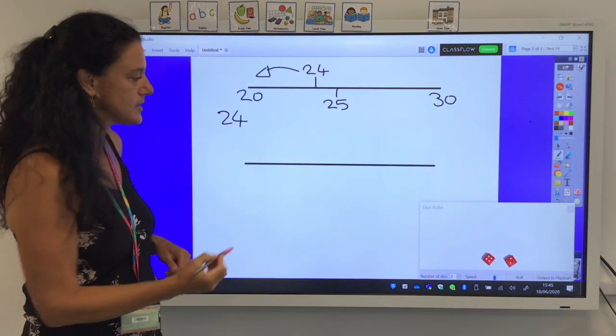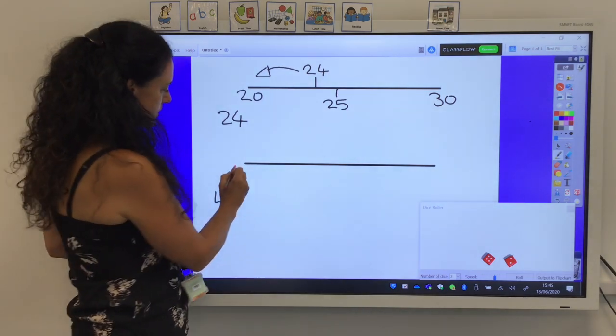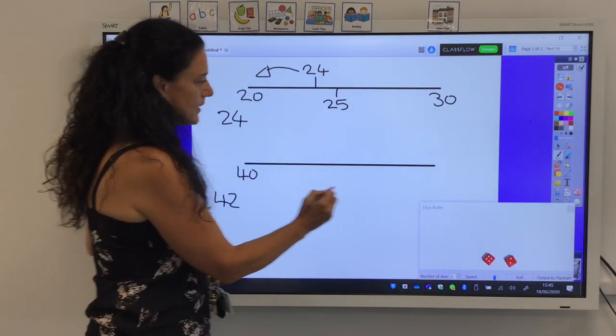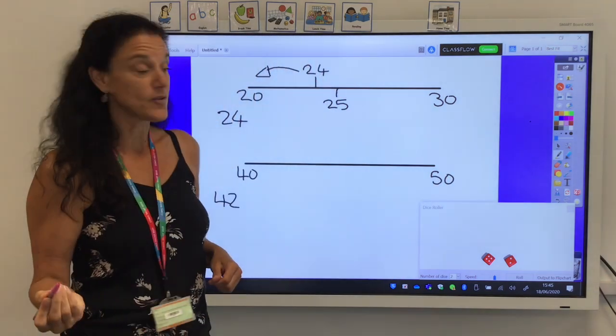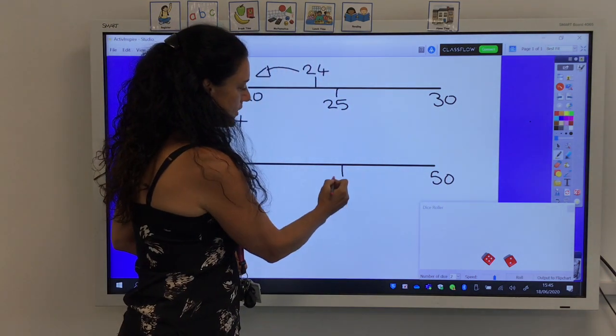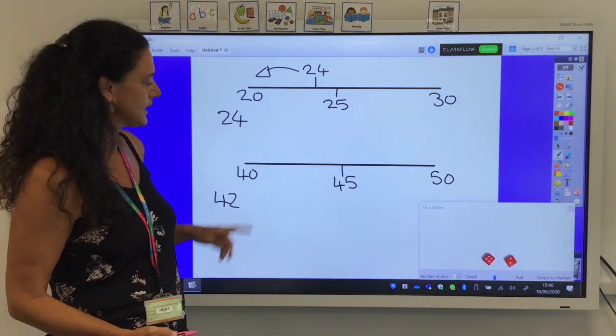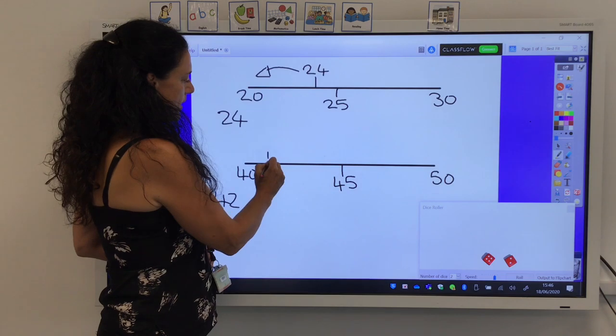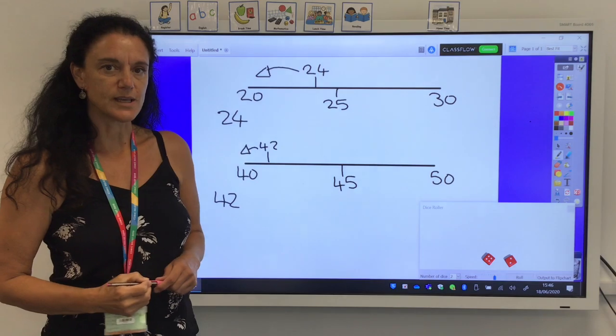If however I use the number as 42, I would need to round down to 40 or up to 50. Again, I'm going to find the midway point, which is 45. And then looking at my number, I can clearly see 42 would be placed about here and I would round down to 40.